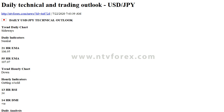Daily USDJPY Technical Outlook: Trend Daily Chart — Sideways. Daily Indicators — Neutral. 21 HR EMA 106.95, 55 HR EMA 107.07. Trend Hourly Chart — Down. Hourly Indicators — Getting Oversold. 13 HR RSI 34, 14 HR DMI. Daily Analysis: Choppy Consolidation to Continue.